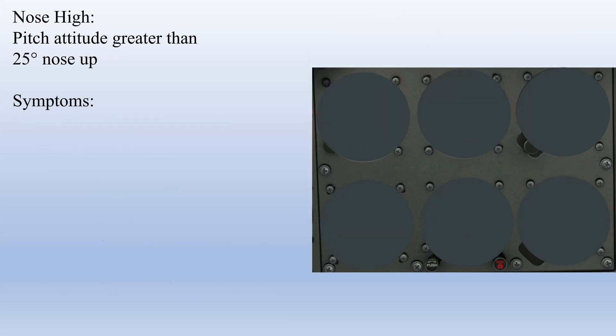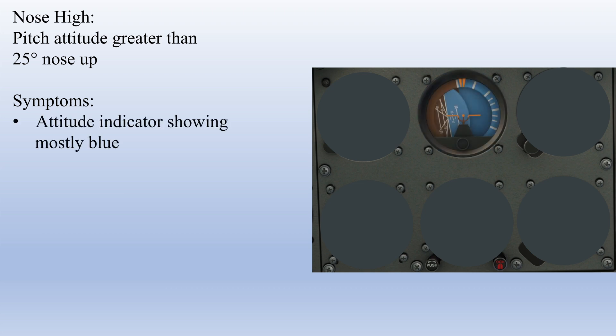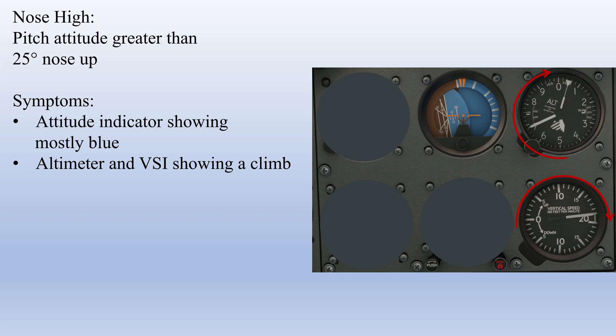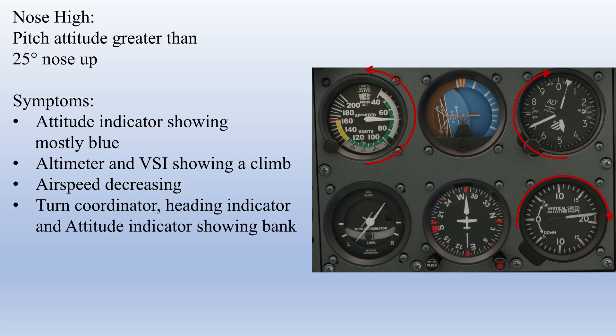A nose high attitude is one in which your pitch attitude is greater than 25 degrees nose up. The indications of this attitude are your attitude indicator displaying mostly blue, indicating a nose high attitude, both your altimeter and VSI indicating a climb or gain in altitude, and your airspeed indicator showing a decrease in airspeed. Just like with a nose low attitude, you can also use your turn coordinator and heading indicator to determine the direction of bank if you're banked in that unusual attitude.